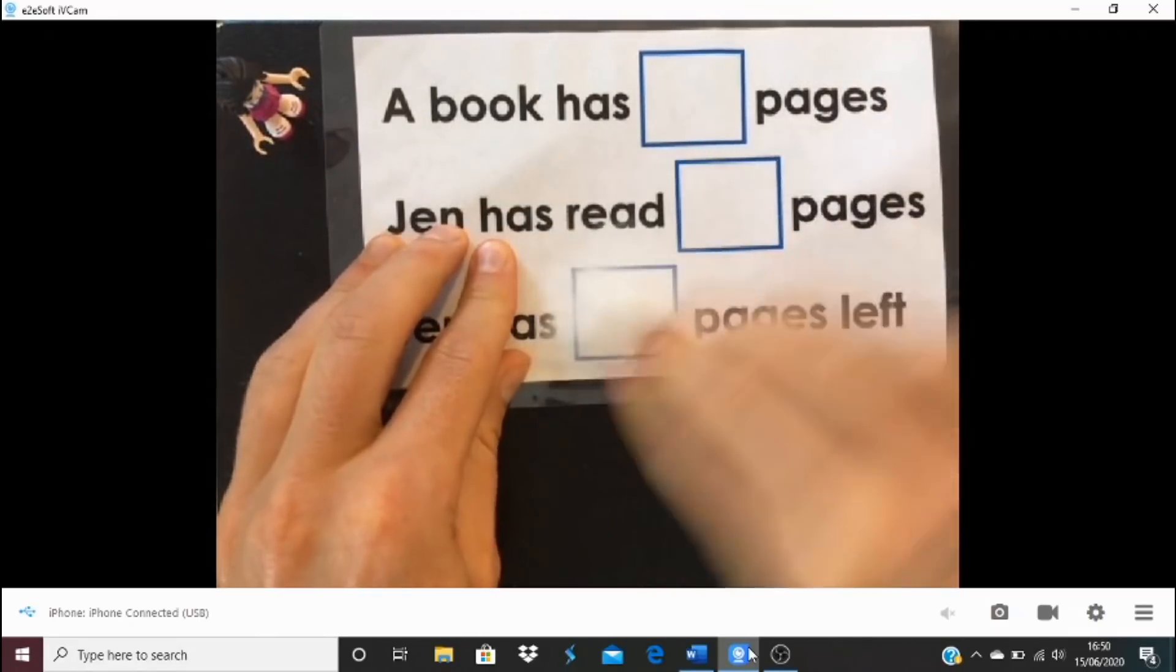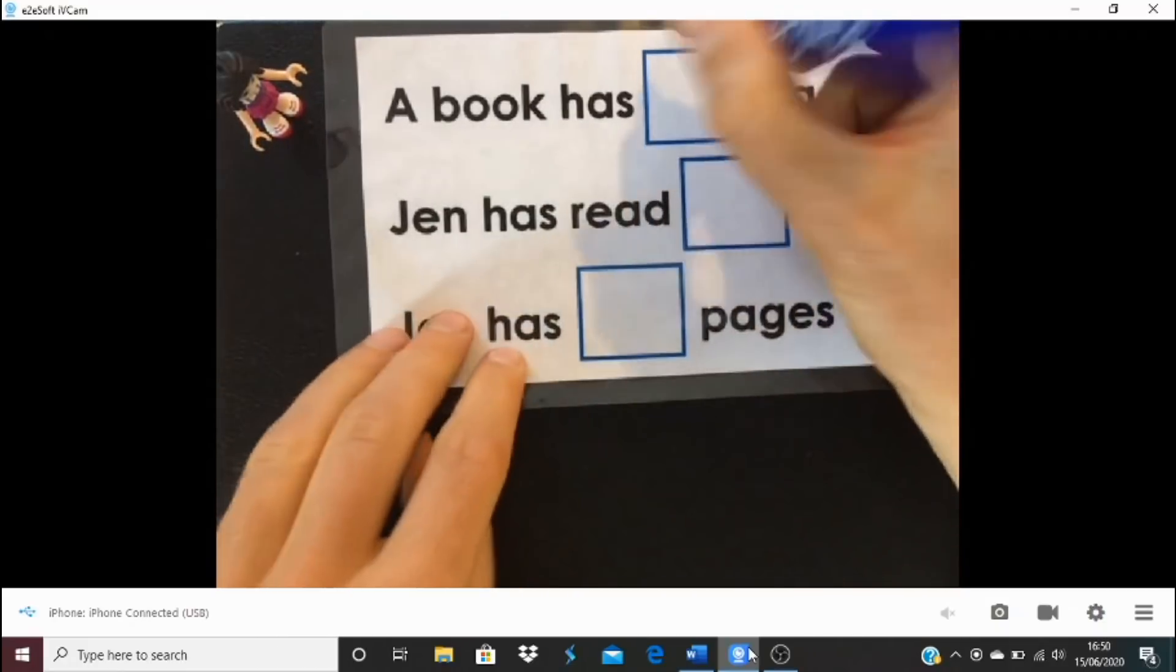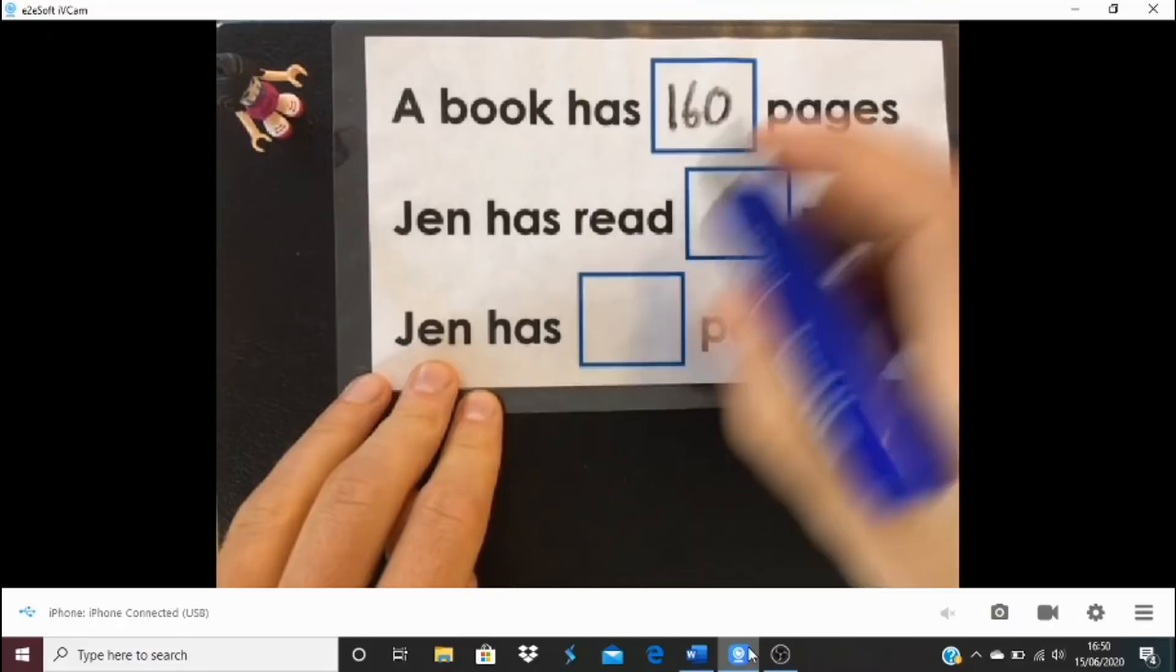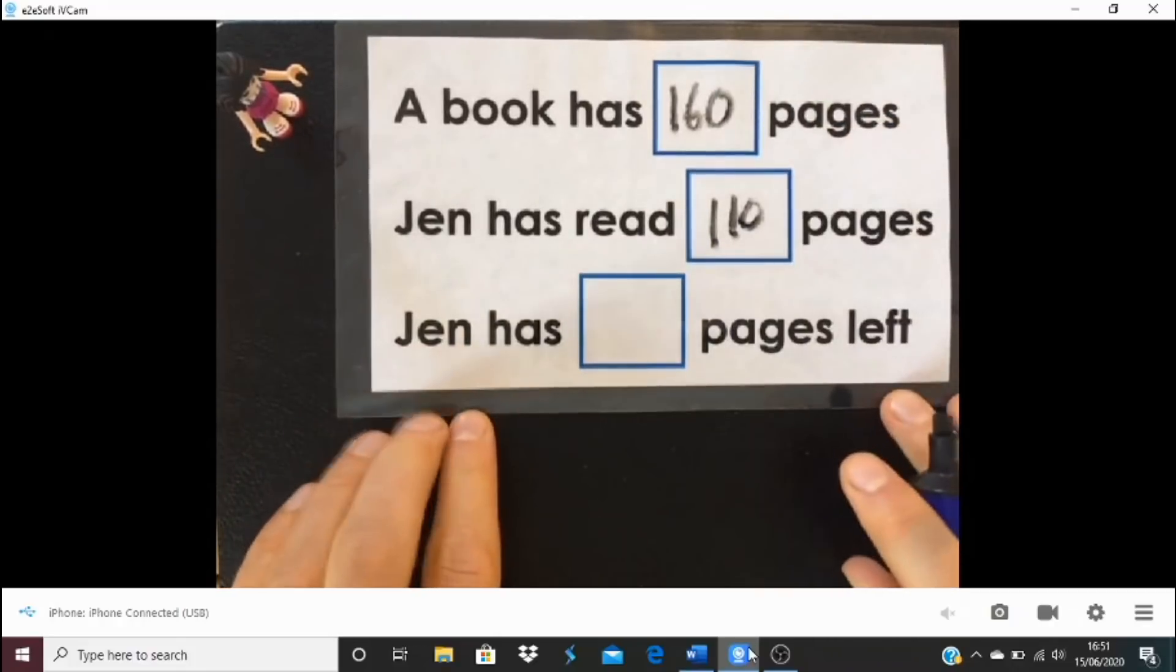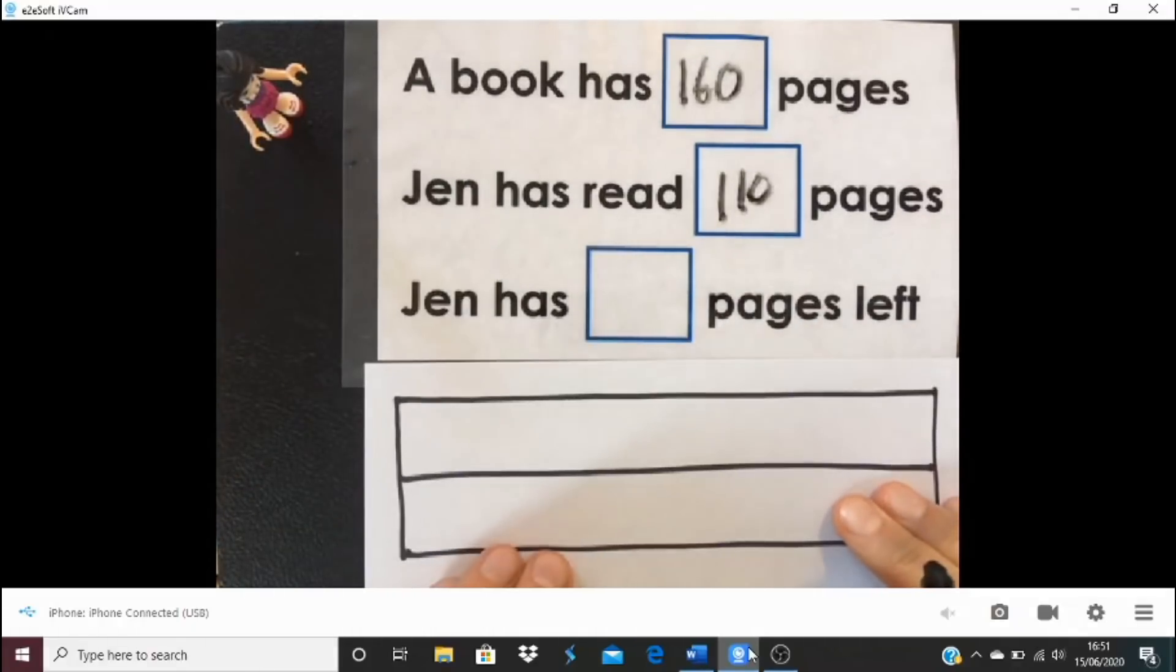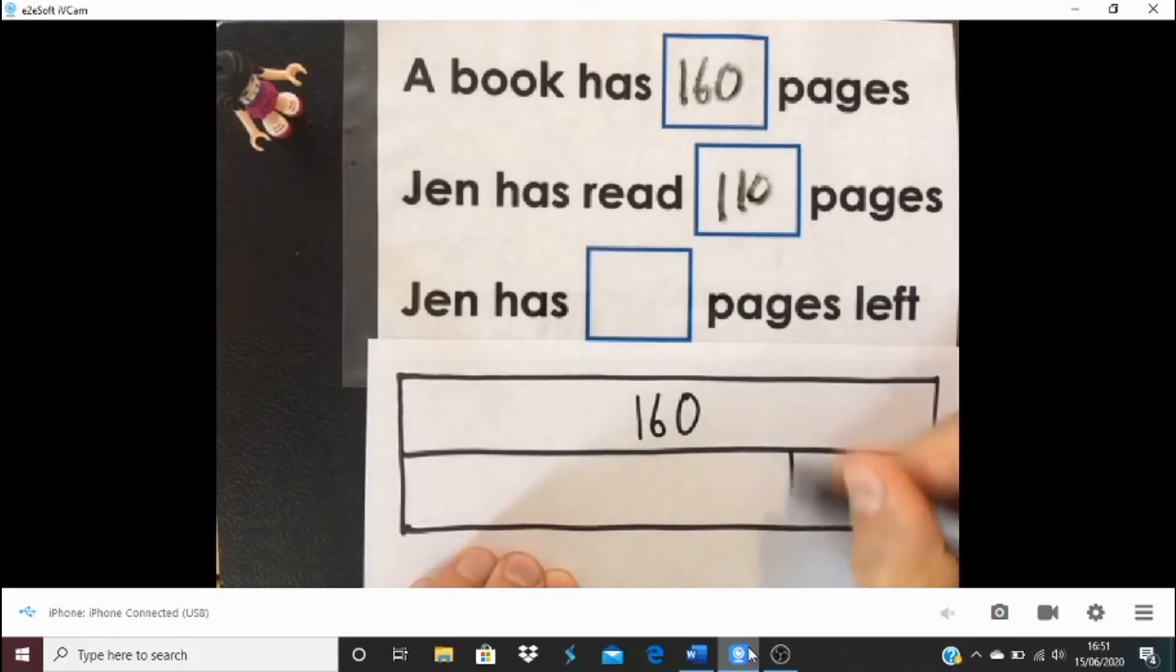That could be phrased in this way around, except this time there's a slight difference. A book has got 160 pages. If Jen has read 110 pages, how many pages has she got left? This time it's a similar structure, except this time what do I have? I have the whole, the amount of pages in the book, 160. The amount that she's read, which is 110, and then what we're asked for is this missing amount. What's the amount she's got left? Of course it is 50 pages left.